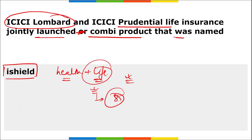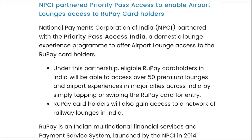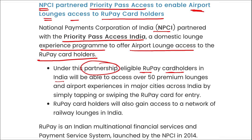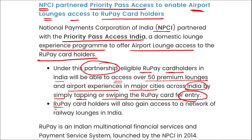ICICI Lombard was founded in 2001. Its Managing Director and CEO is Bhargav Das Gupta, and the headquarter is in Mumbai, Maharashtra. Next, NPCI — the National Payments Corporation of India — has partnered with Priority Pass to enable airport lounge access for RuPay card holders. Under this partnership, eligible RuPay card holders in India will be able to access over 50 premium lounges and airport experiences in major cities by simply tapping or swiping their RuPay card. RuPay card holders will also gain access to a network of railway lounges in India.